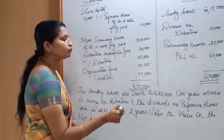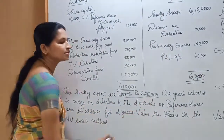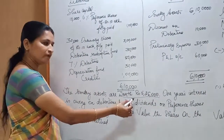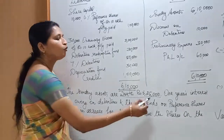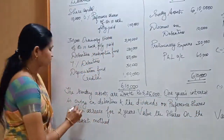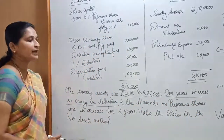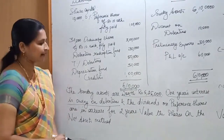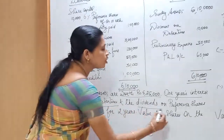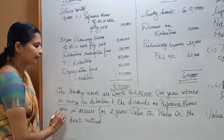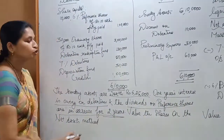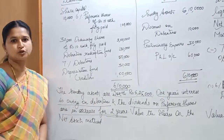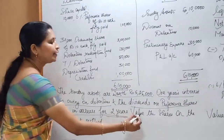Regarding the adjustments: the market value of sundry assets is rupees 5,25,000. One year's interest is outstanding on debentures. And dividends on preference shares are in arrears for 2 years, so 2 years' preference dividends are to be paid.